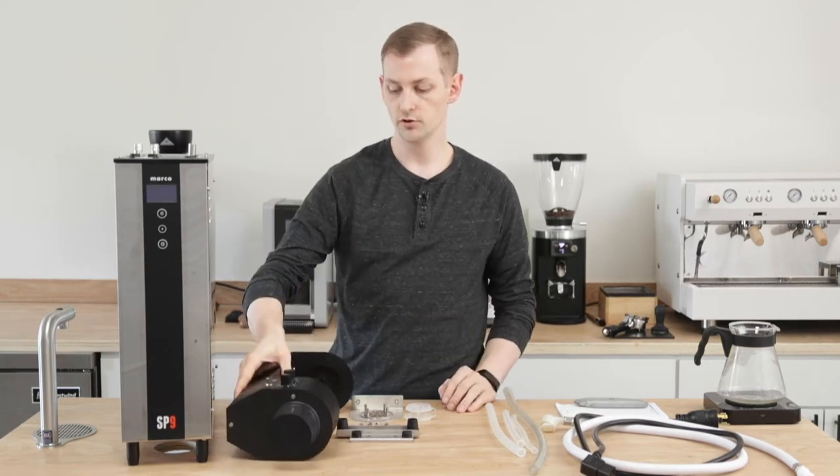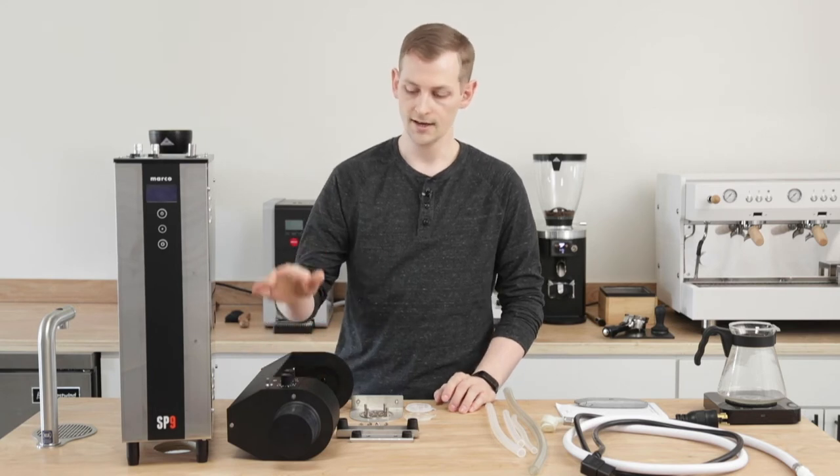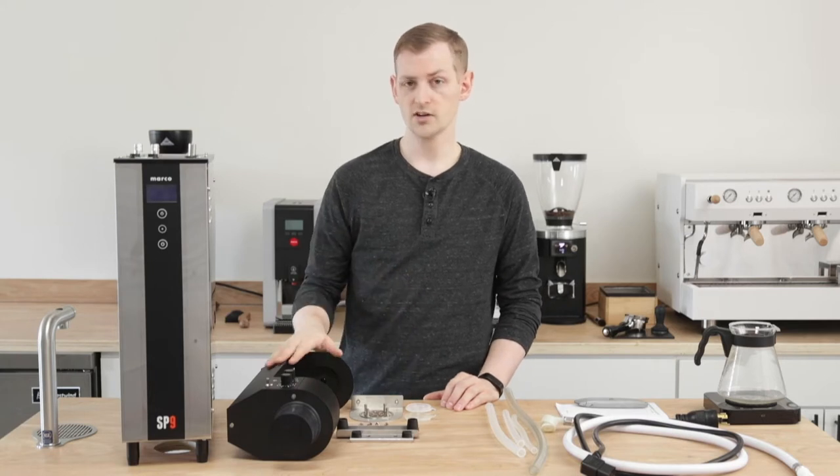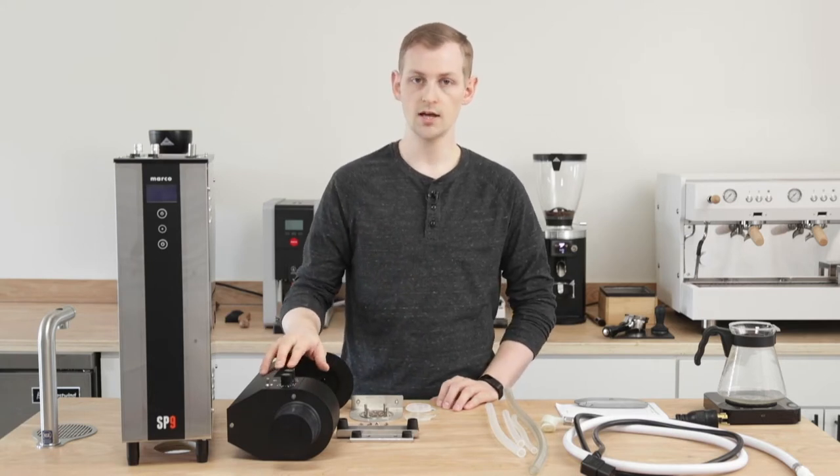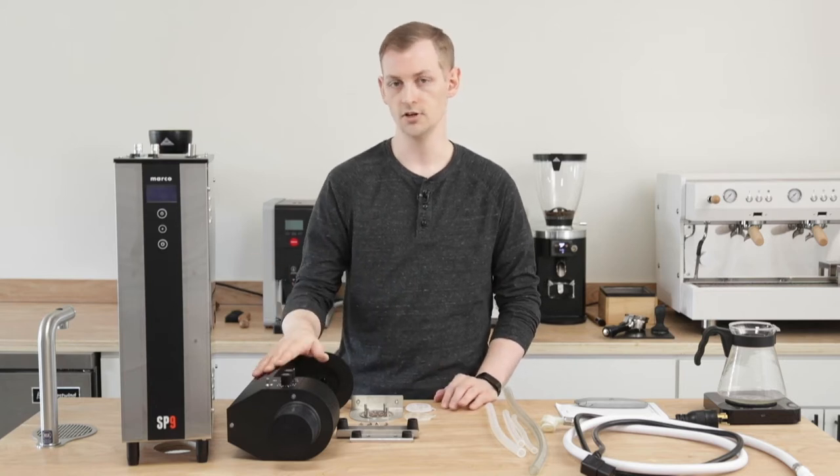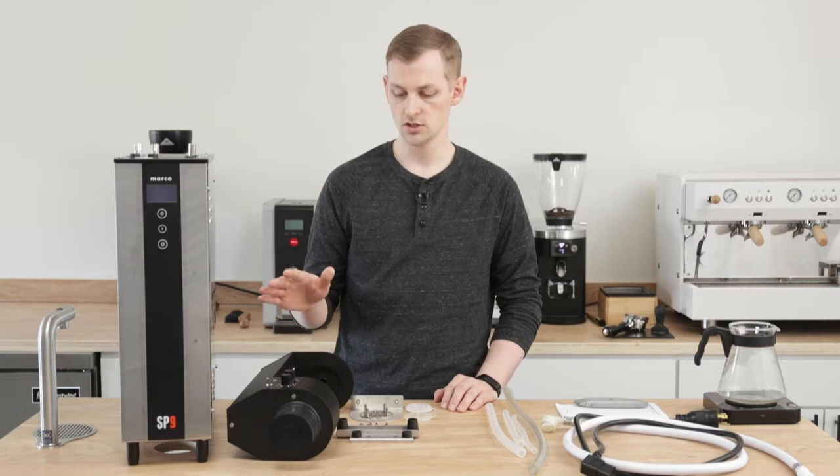Every SP9 boiler is capable of hooking up two of these, so you can order a single or a double. The installation changes just slightly depending on how many brew heads you use. We are actually going to use an SP9 brew head along with a single font, which is just a water delivery faucet.